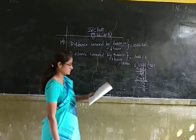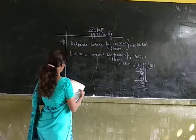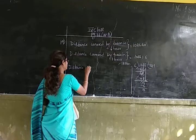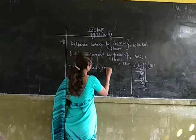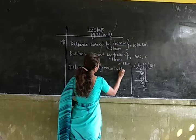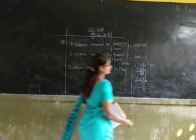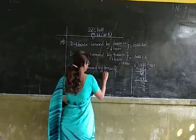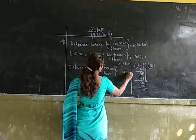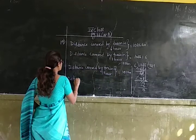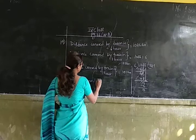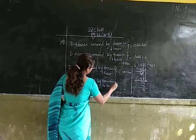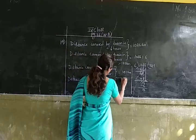Now we have to find out how much distance the train covers in 14 hours. Distance covered by train in one hour is 181 kilometers. Now let us find out how much distance the train covers in 14 hours. Let us multiply 181 by 14.